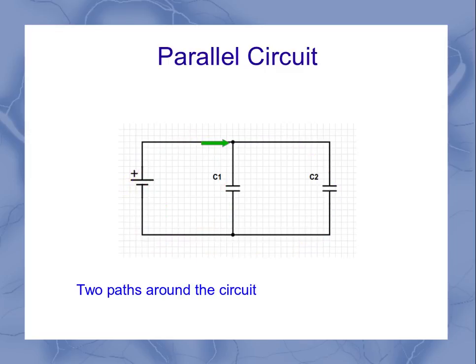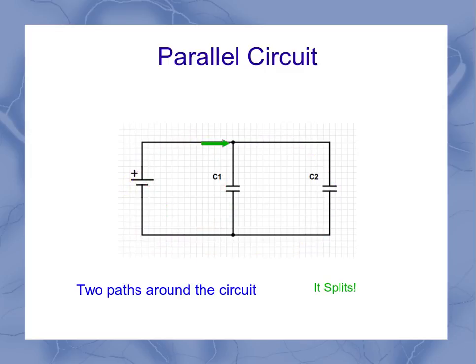Another way to think of this is to look at the fact that it splits. Current comes into this one point, and then the path splits into two other paths.